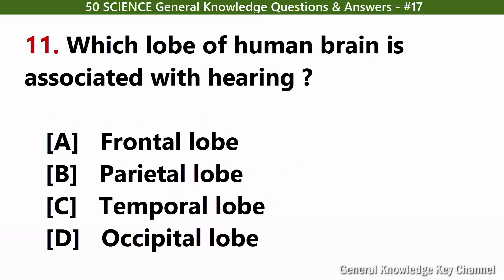Which lobe of the human brain is associated with hearing? Answer C: Temporal Lobe.